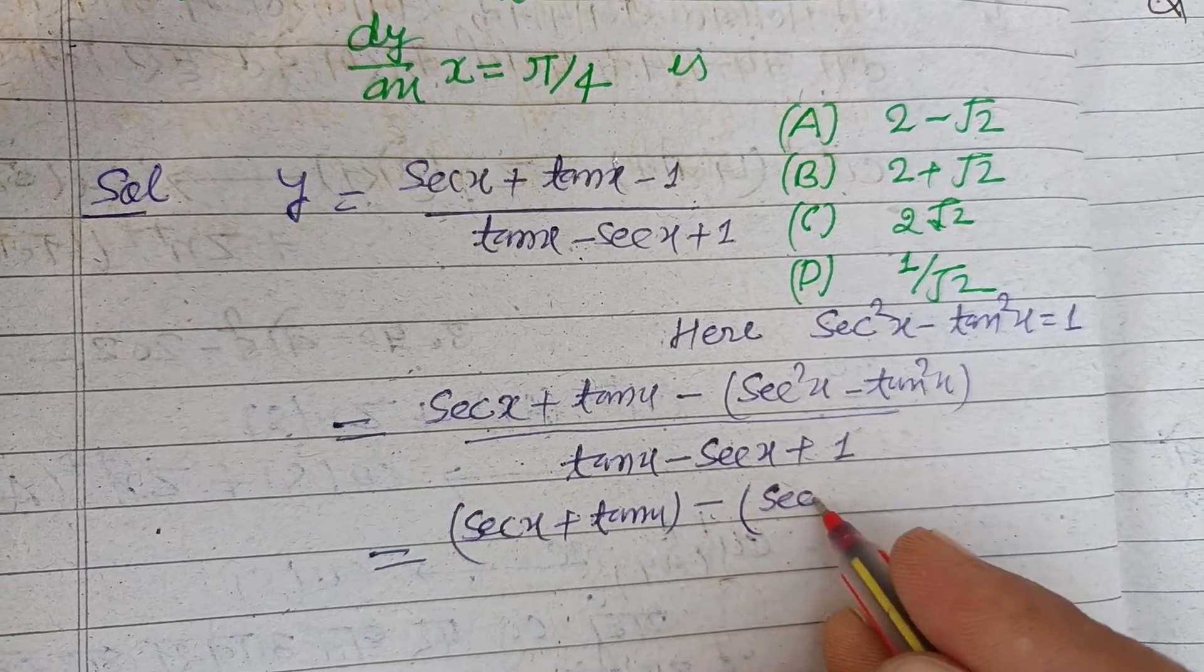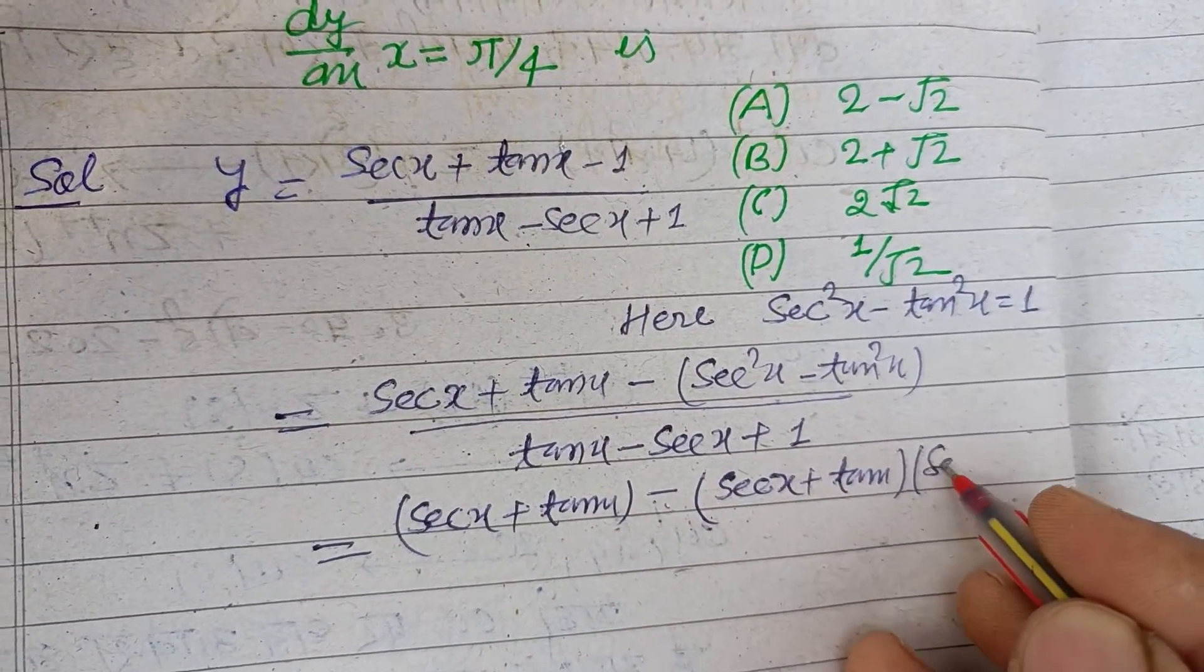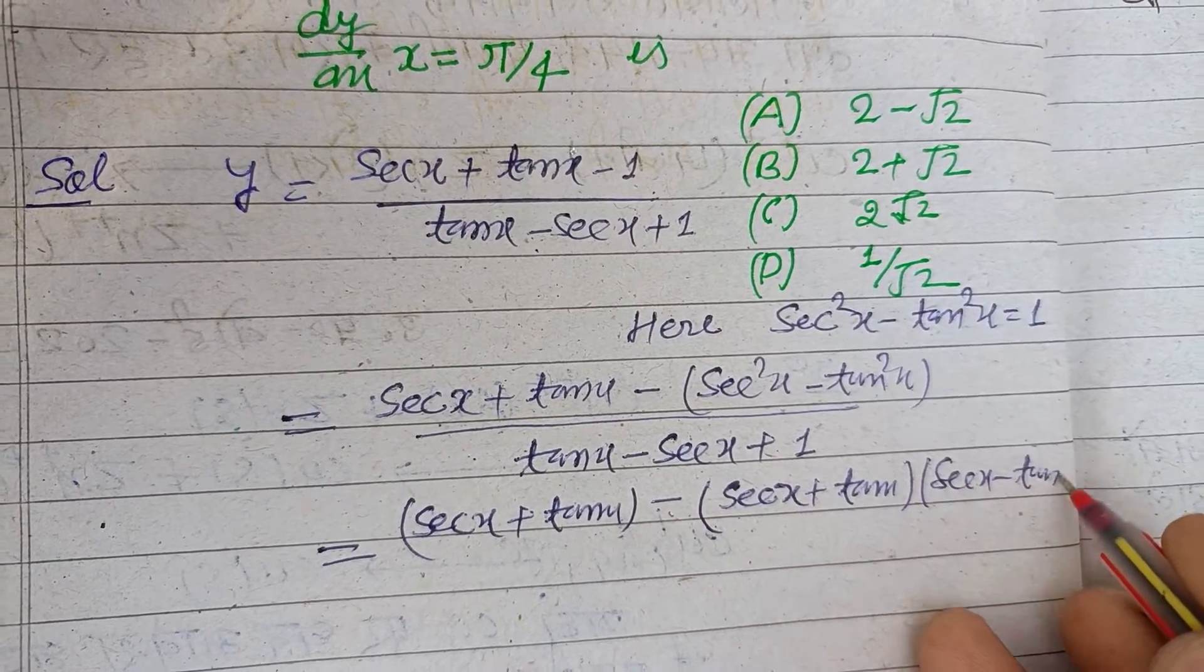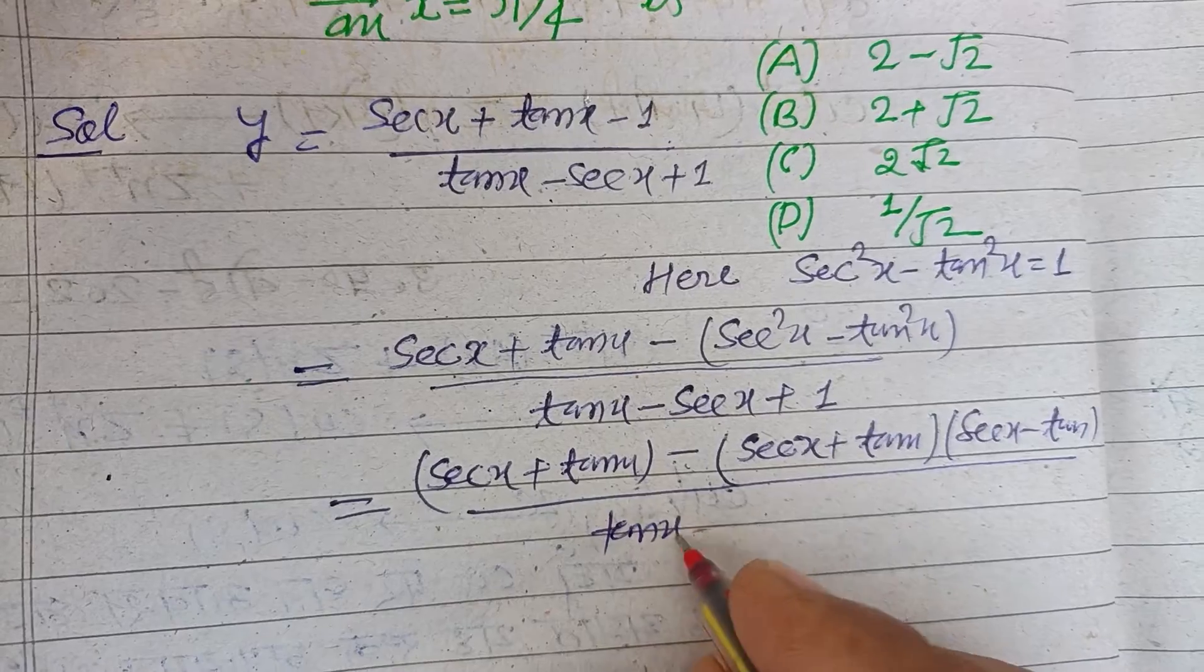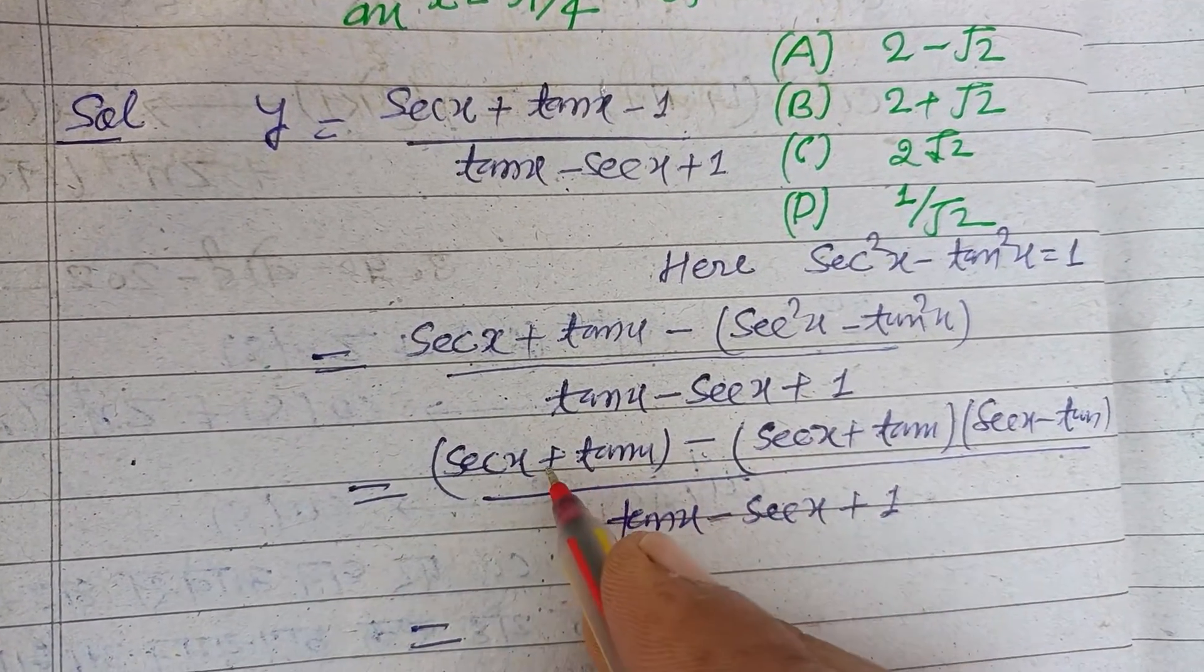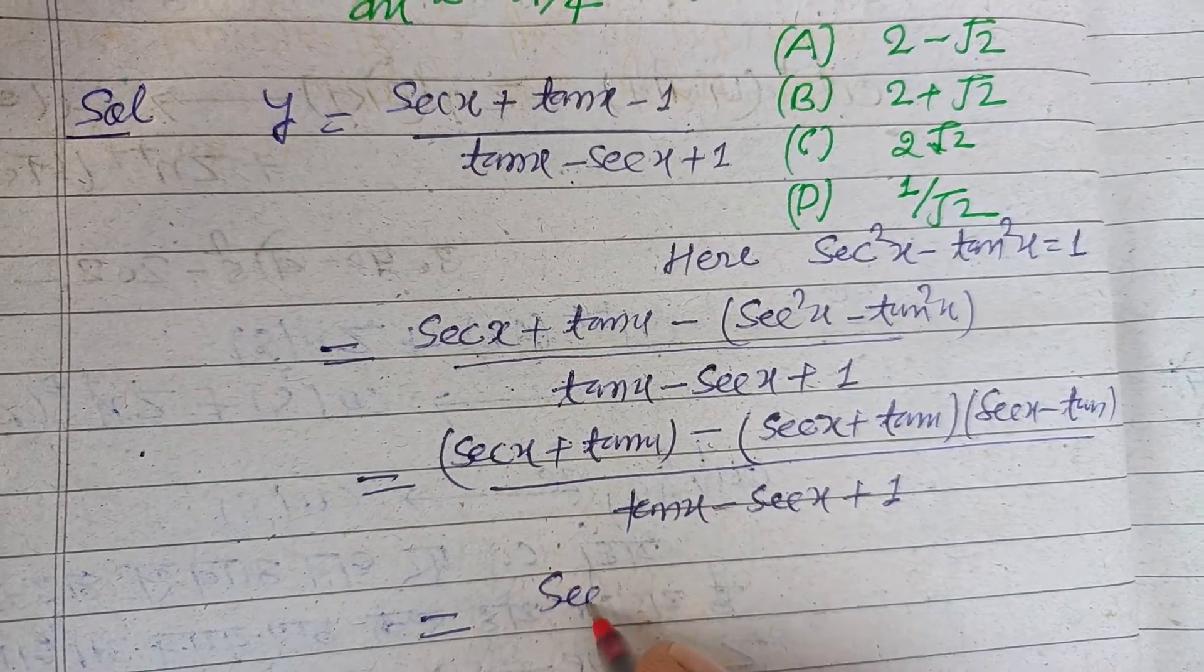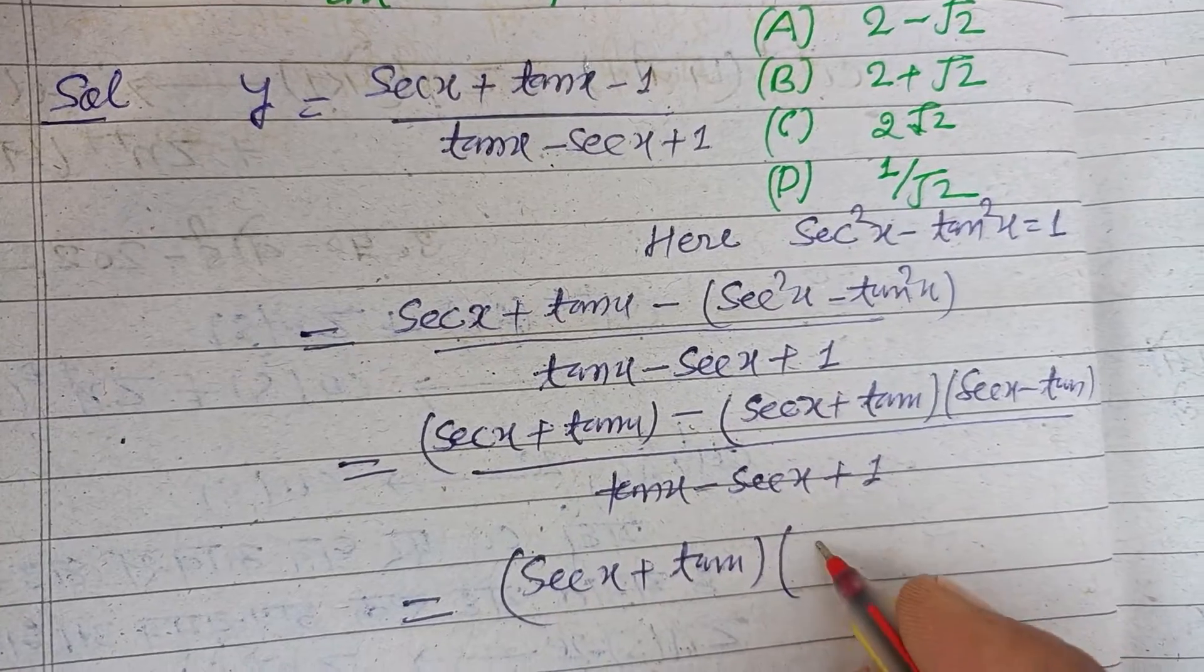Using the a² - b² identity: (sec x + tan x)(sec x - tan x)/(tan x - sec x + 1). We can take sec x + tan x as a common factor from here.